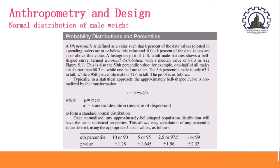This allows easy calculation of any percentile value desired using the appropriate k and z values as follows. In the kth percentile, when using the 10th or 90th percentile, your z-value would be positive, negative, 1.28. When your kth percentile is at 5th or 95th percentile, the z-value is positive, negative, 1.645. If the percentile is 2.5th or 97.5th percentile, the z-value would be positive, negative, 1.96. And lastly, if your percentile would be 1st or 99th, z-value would be positive, negative, 2.33.